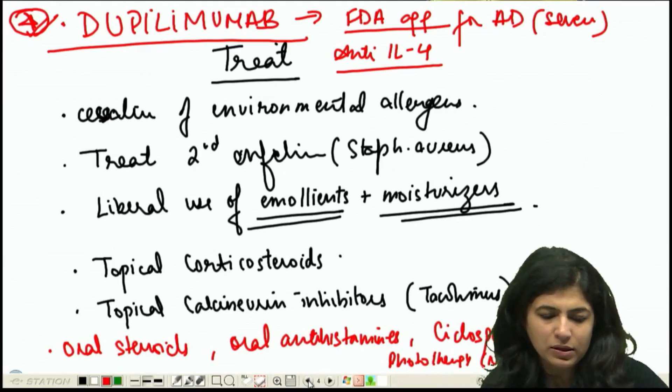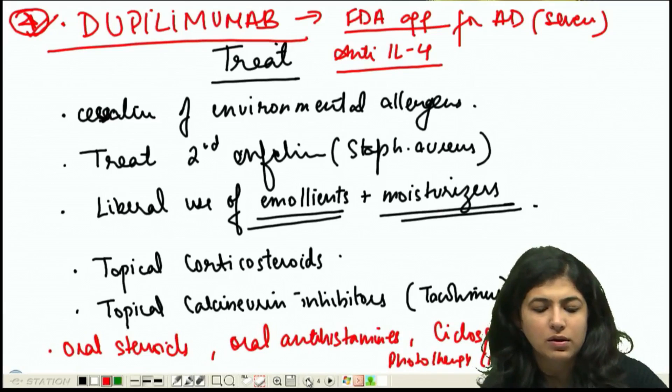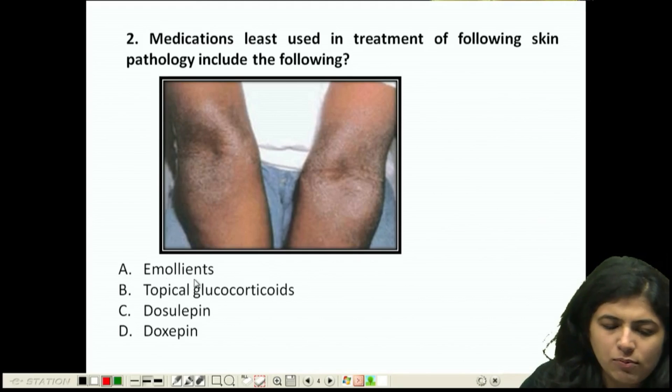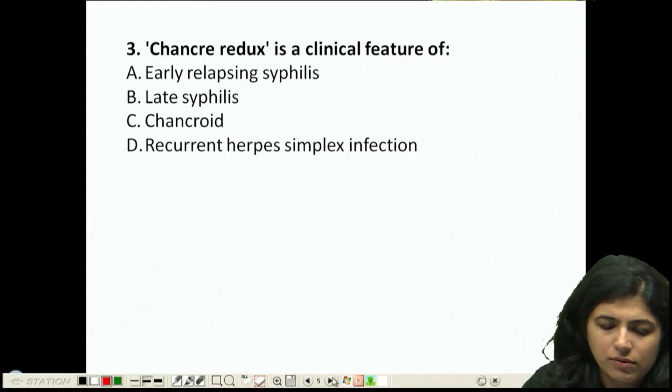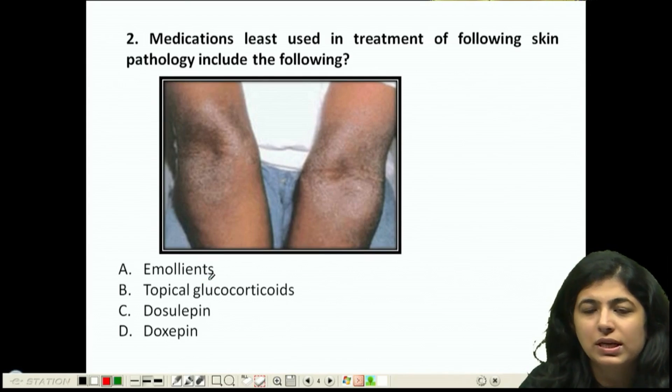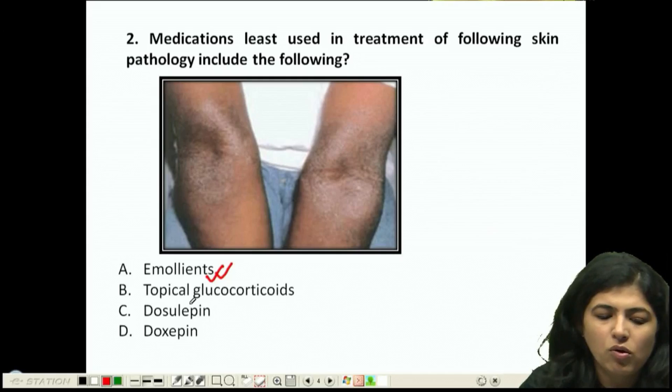Coming back to the question - medications least used? Emollients I just told you are very important in treatment of atopic dermatitis. My prescription would definitely involve a lot of emollients. Topical glucocorticoids, yes.